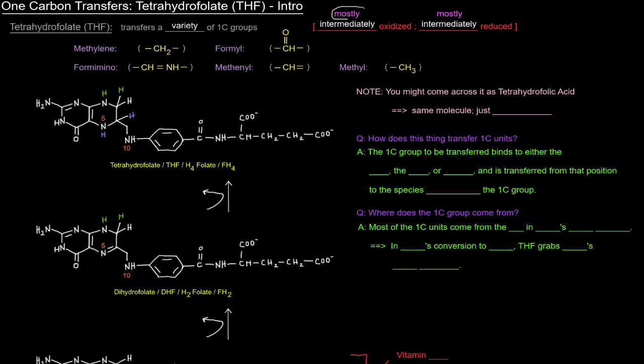And that's mostly the case. But here I'm specifying it's mostly the case because the methyl group is actually the most reduced that a one-carbon group could be. That's not really intermediately reduced or intermediately oxidized, that's the most reduced, but there's a special deal with that one, and we'll see that later.